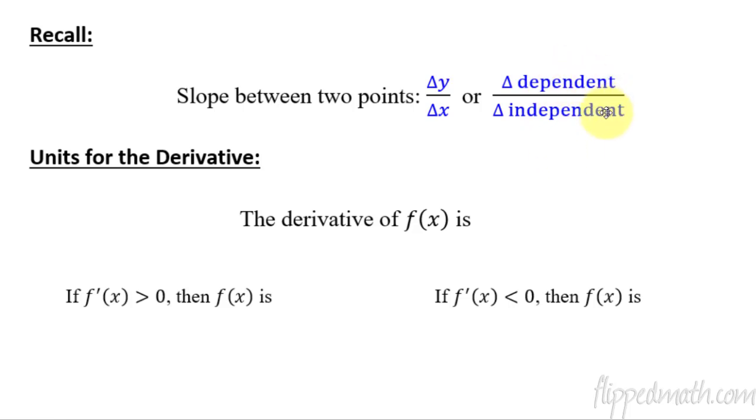So what is the dependent and independent variable? Well function notation is actually really easy to tell which one's the dependent and the independent because whatever gets plugged into the function that is the independent. So when you have f of x, the derivative of f of x is represented by the unit for f divided by the unit for x. Now this is the same thing as the y values divided by the x values. This is slope. The derivative is just slope at a very specific point.